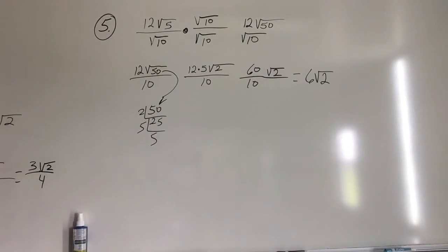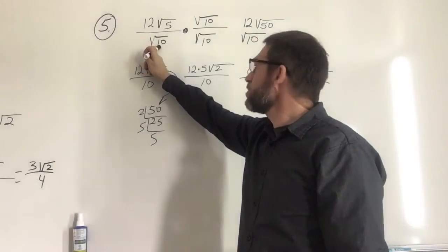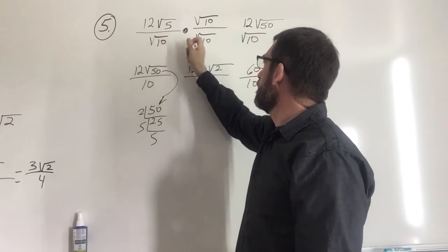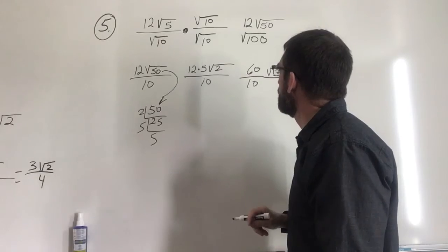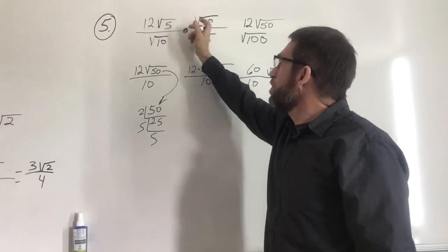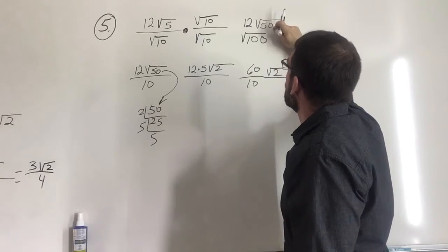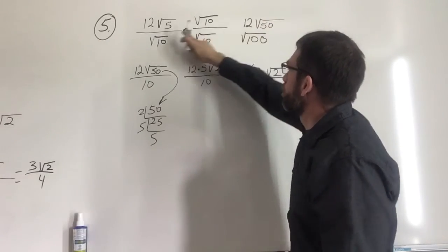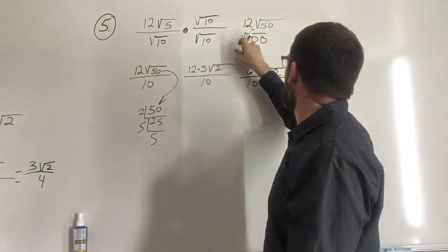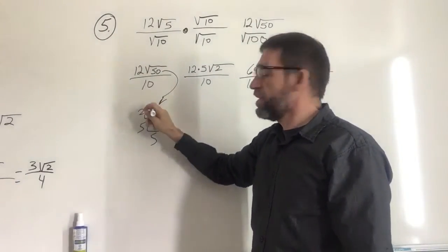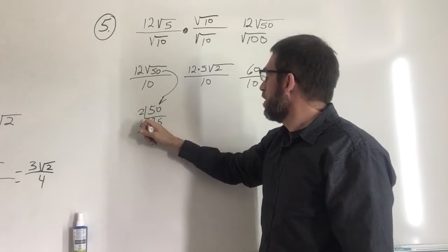Let's do number 5. You start with 12 radical 5 over 10. Again, you want to get the square of 10. So multiply: 10 times 10 gets you 100, and 10 times 5 gives you 50. You still move your 12 over — so you have 12 radical 50 over 100. Now you can square 100, which gives you 10. So I have 12 over 10 and radical 50. I take my 50 and find its primes: 2, 5, and 5.